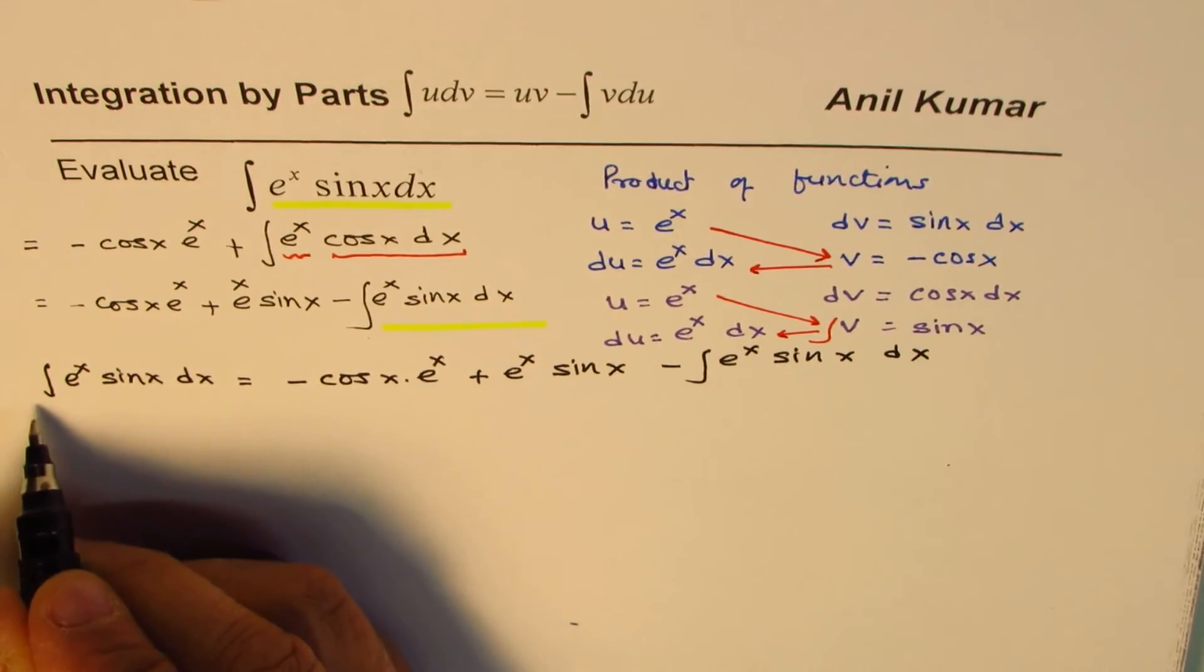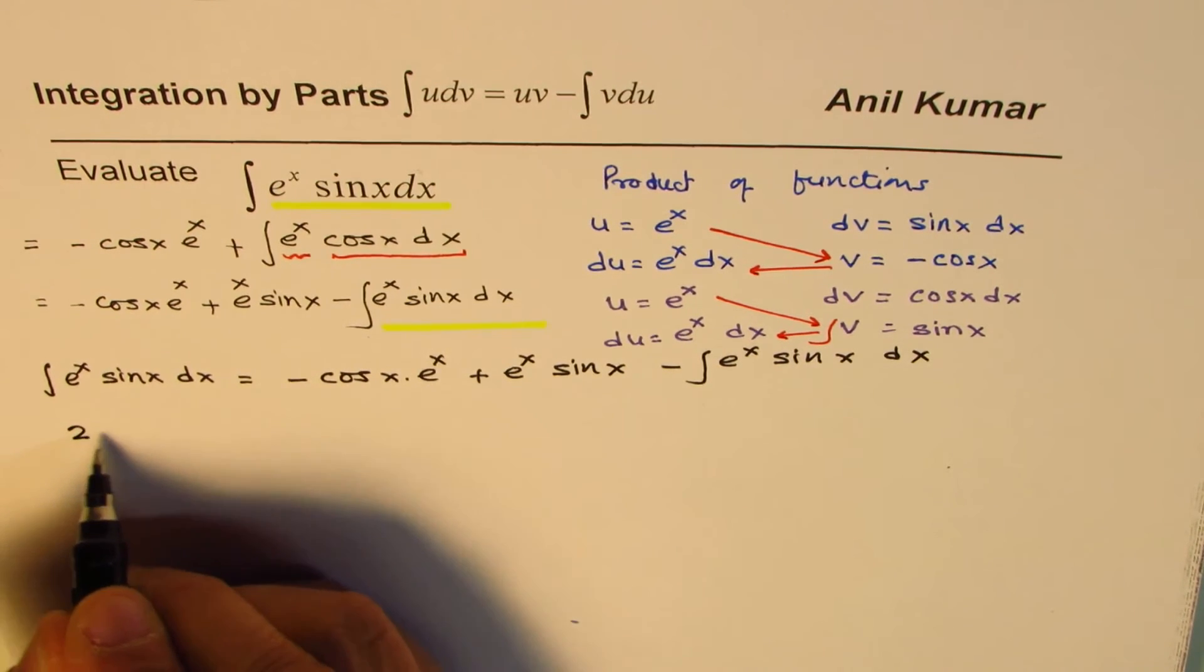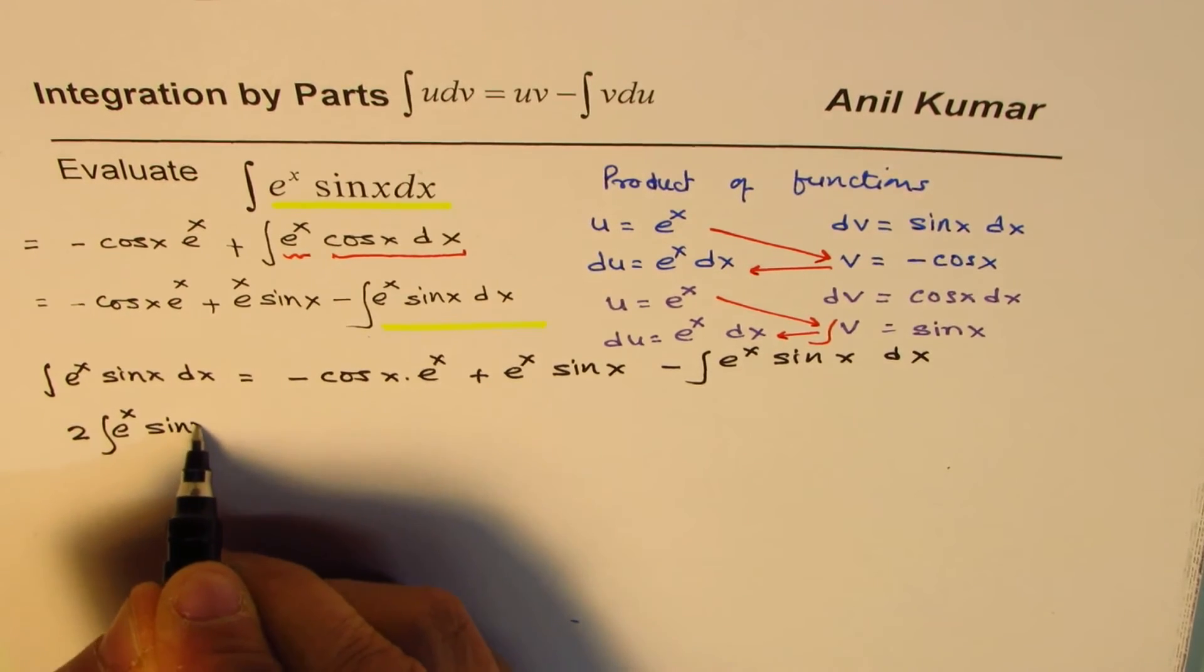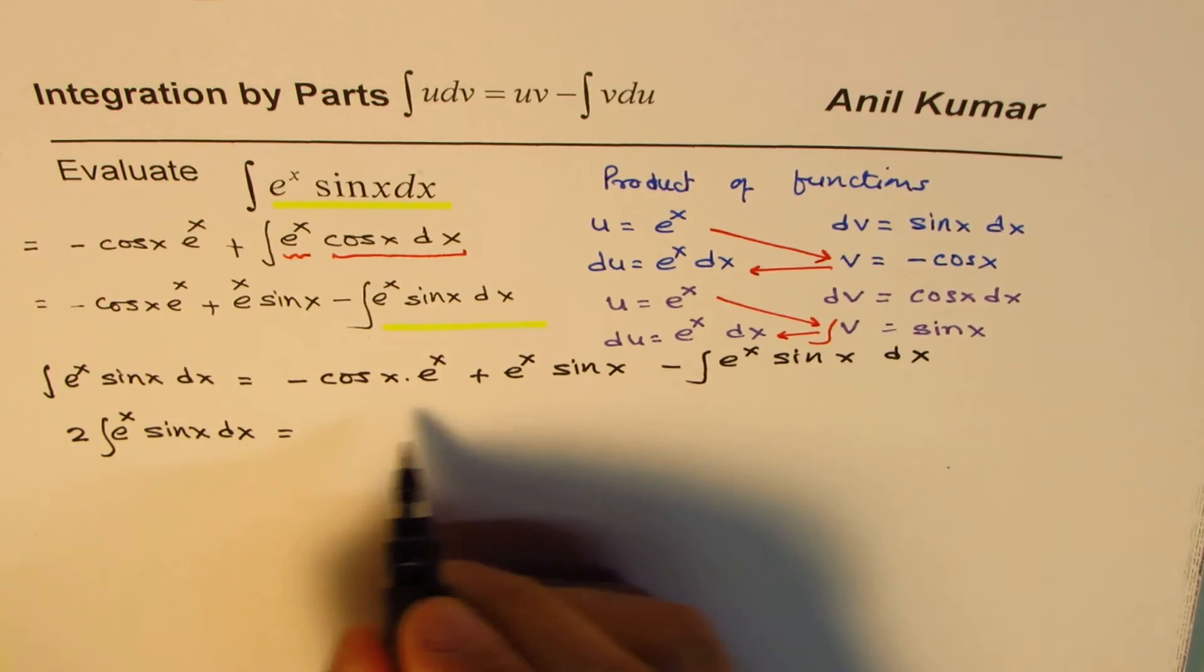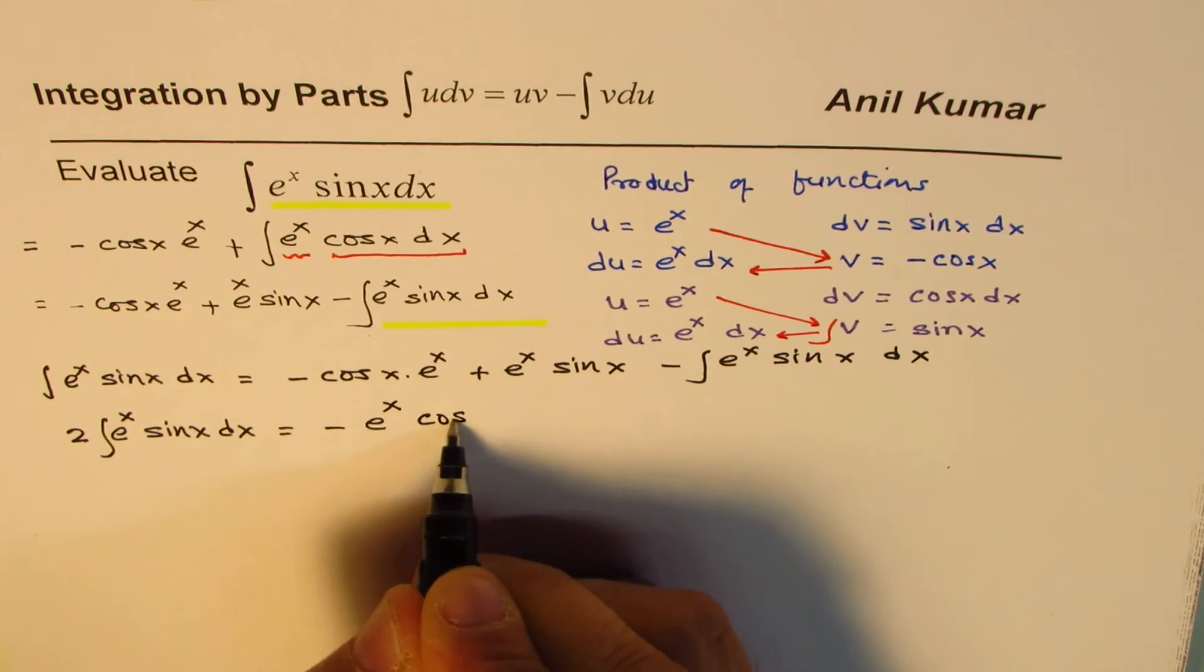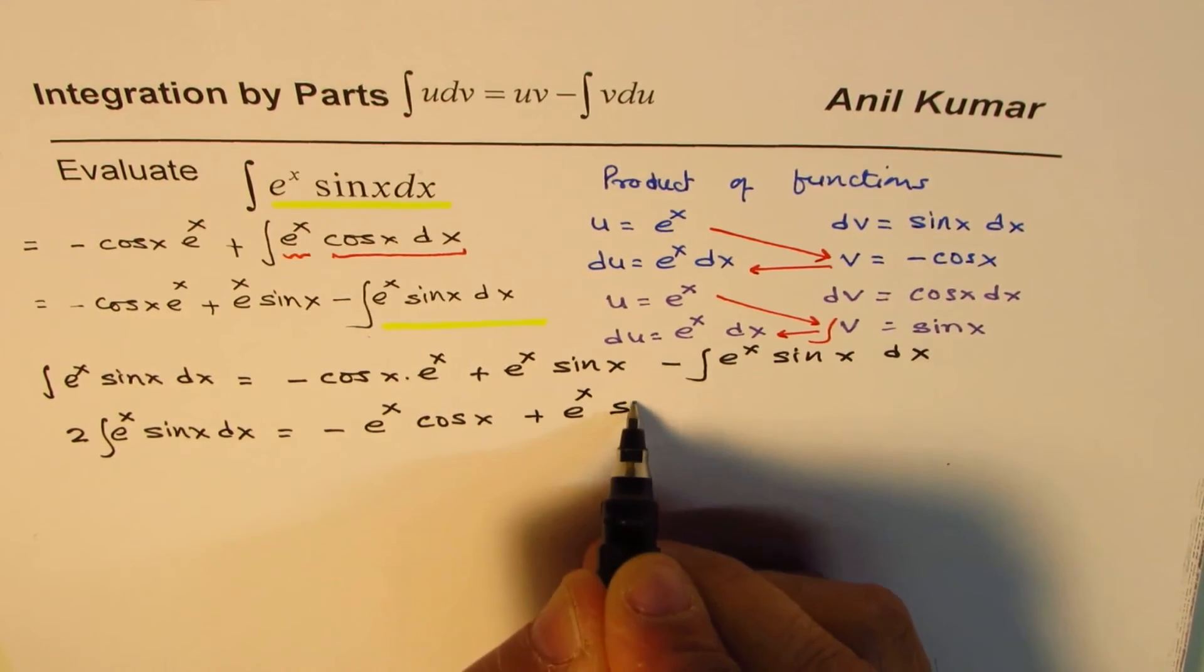We can bring this to the left side, so it becomes two times this function. So now we're going to say two times integral of e to the power of x sin x dx equals these two things, which is minus e to the power of x cos x plus e to the power of x sin x.